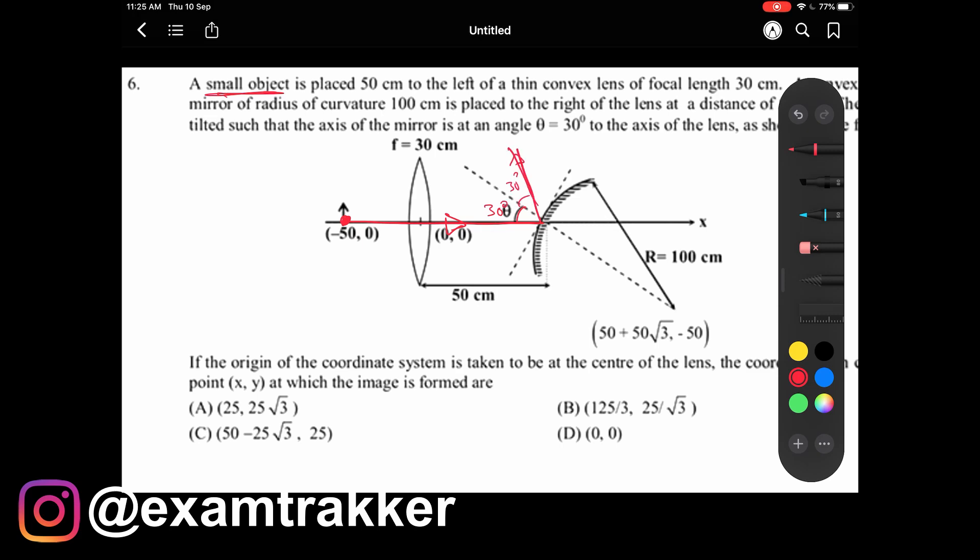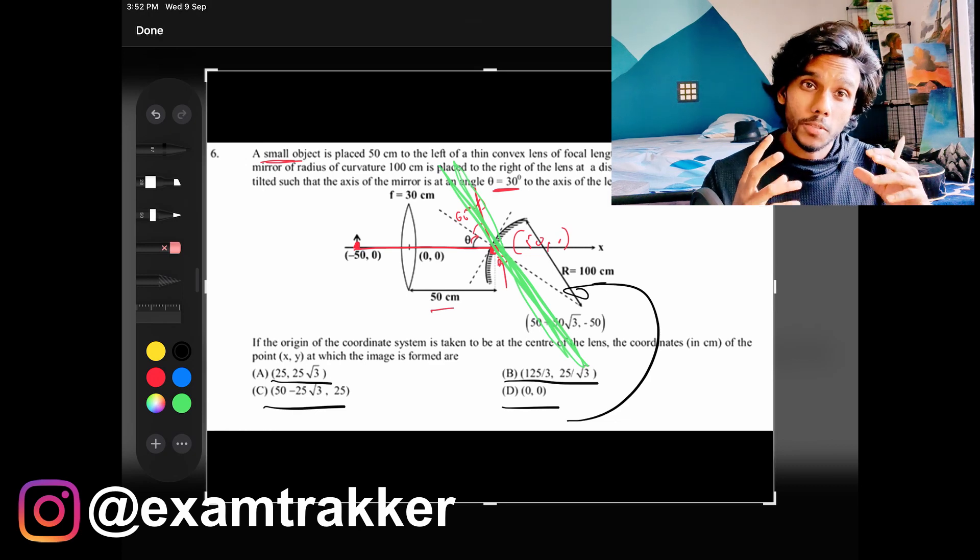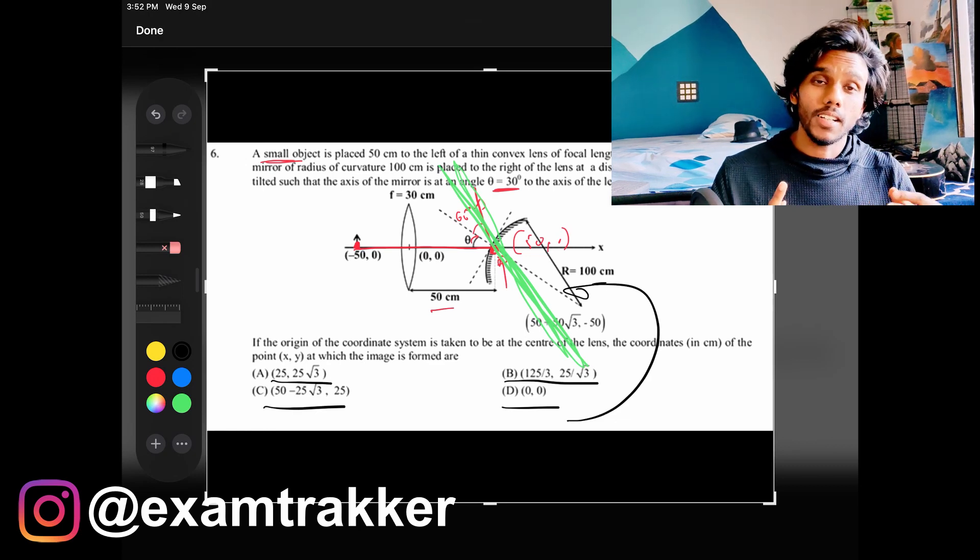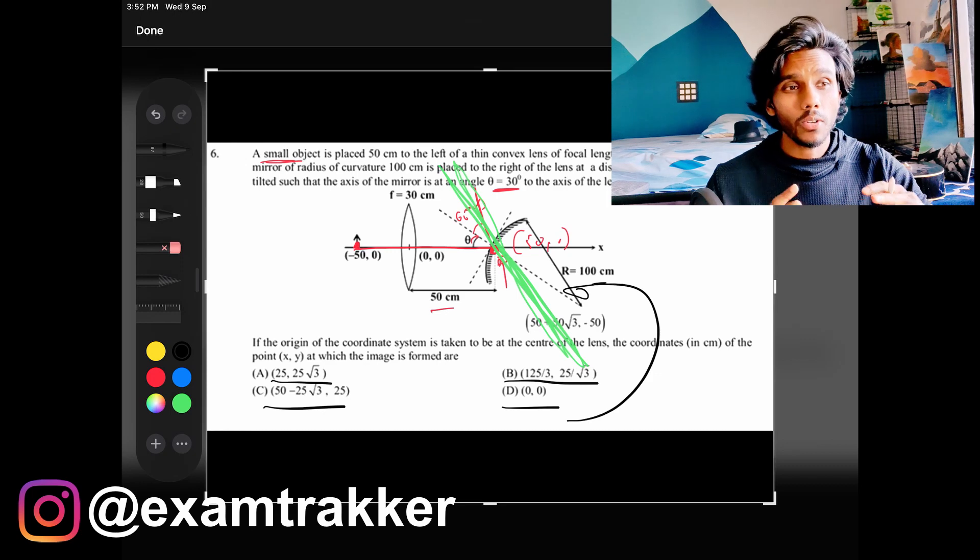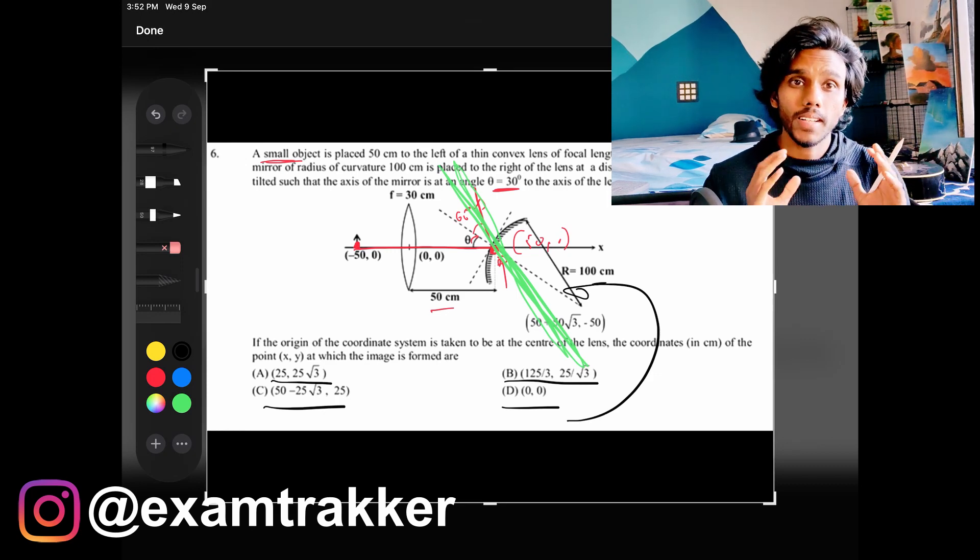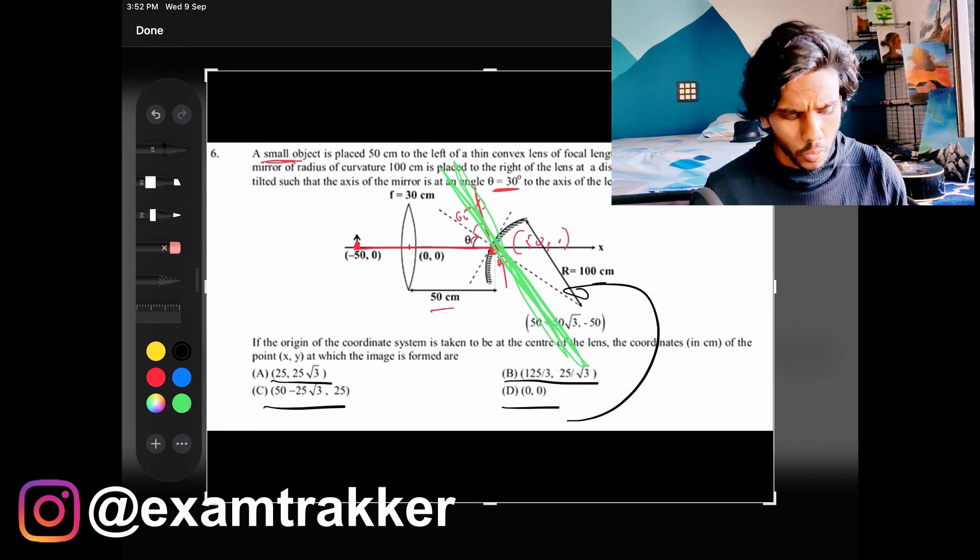We even know the coordinates of this point, which is nothing but 50 comma 0. So we can definitely simply find the equation of this straight line. Once we have the equation of straight line, what I did is I simply substituted all the options on the equation of the straight line, and bang, only one option was satisfied. I know you have questions like what if two options satisfy the equation. In that case, yeah, you are out of luck in some way, but you still have other options to solve this question. There are other ways.